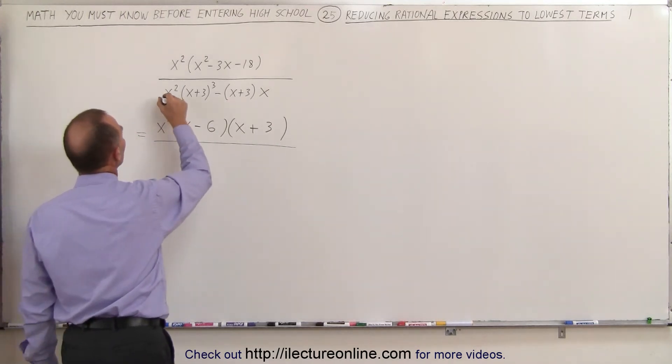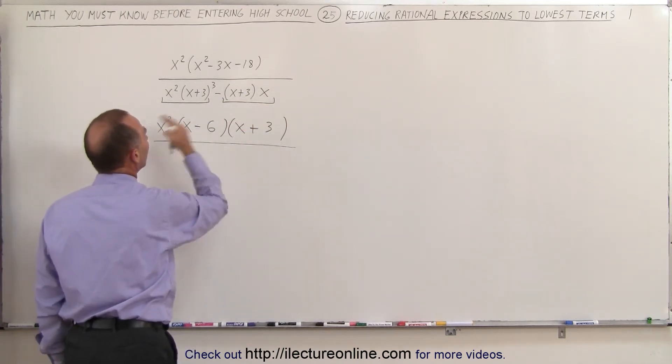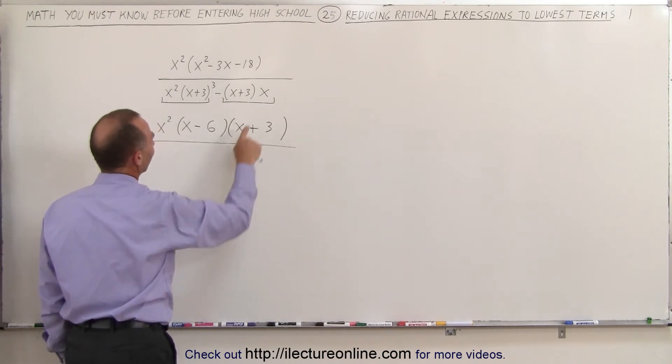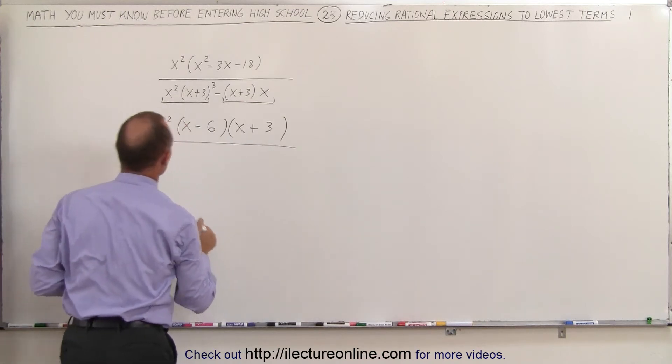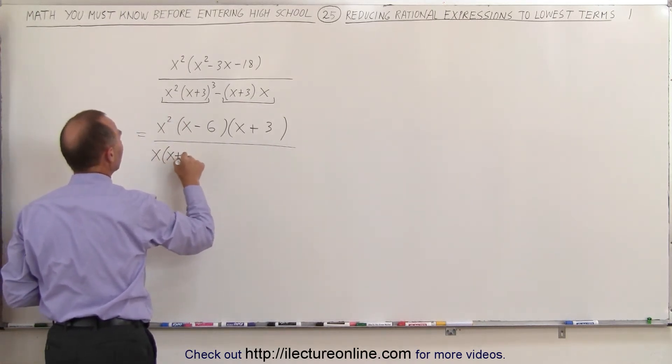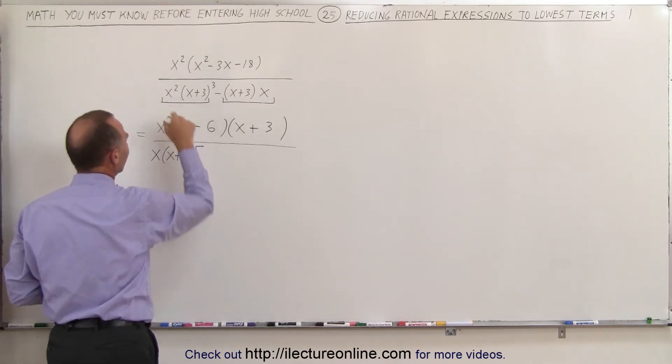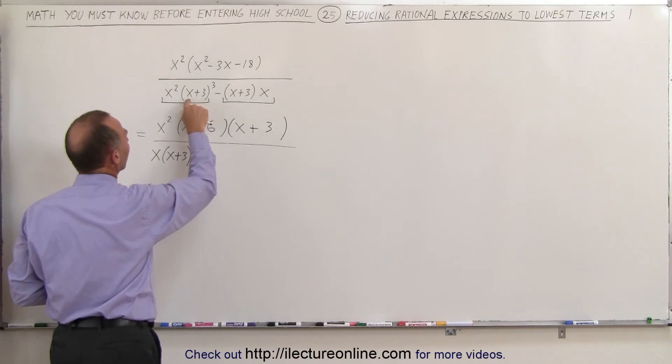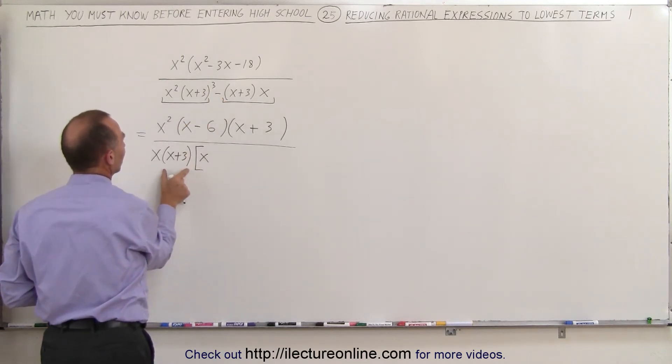In the denominator, notice I have this minus this. So I have two terms here. I need to factor out whatever is common out of the two terms. I can factor out an x, and I can factor out the quantity x plus 3. So in the denominator, I get x times x plus 3, and let's see what's left. On the left side, I have an x left, and I have a quantity x plus 3 square left, because I only factor out an x plus 3 to the first power.